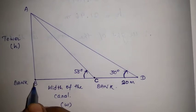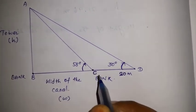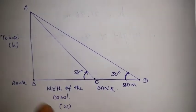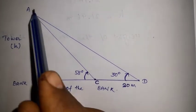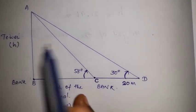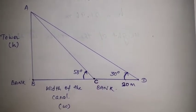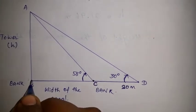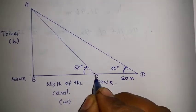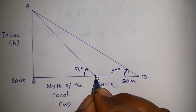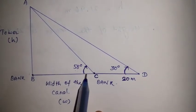The canal is double-banked — one bank where the tower stands, and another bank at point C. From point C, the angle of elevation of the top of the tower is 58 degrees.